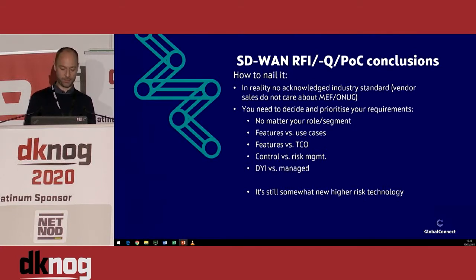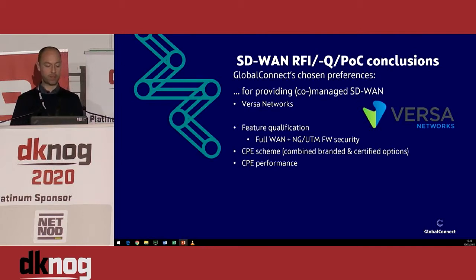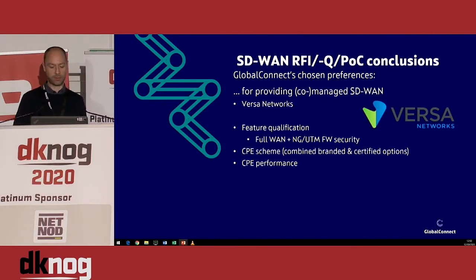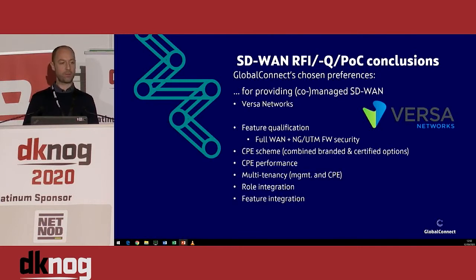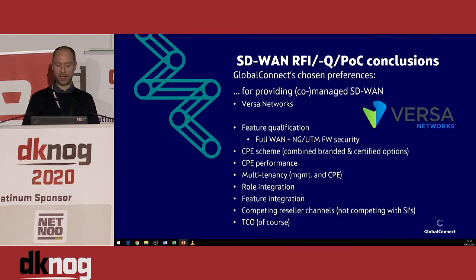It's still somewhat new and higher-risk technology. What we ended up doing was nailing down our criteria and selecting a vendor called Versa Networks. They offered a full feature set, especially on the full WAN feature set and on the security firewall feature set where they scored high. They had a CPE scheme that we liked — both branded and certified options — so we could go the safe way first and explore alternatives down the road. They provided proper performance and had a high level of multi-tenancy and role and feature integration, because it's a solution built for SD-WAN from the ground up without a lot of legacy.